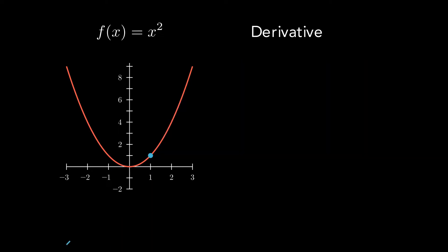For example, imagine the line that is tangent to the graph at x equals 1. What is the slope of that line? It's hard to know precisely how to draw a tangent line.